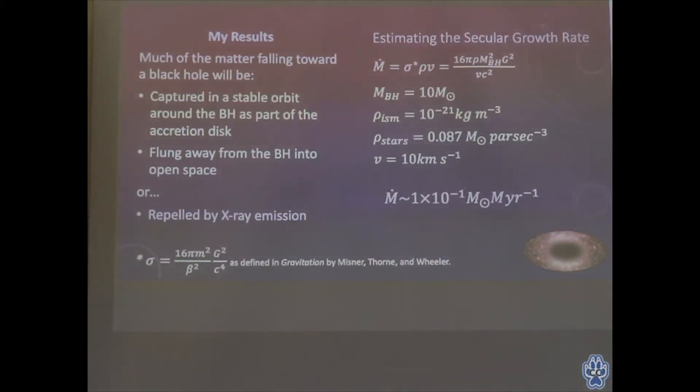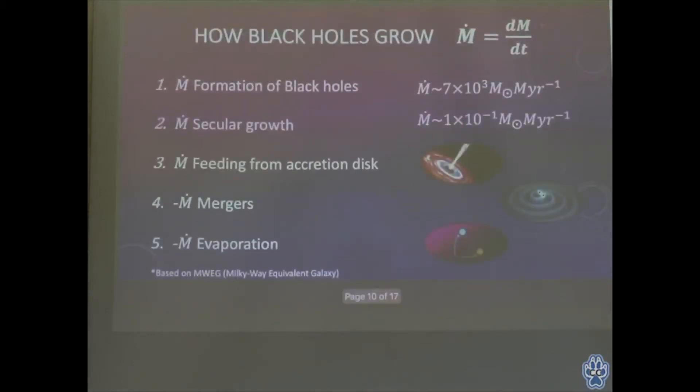The results of my simulation showed it's actually difficult for matter to be captured by a black hole. Often it's captured in a stable orbit as part of the accretion disk or just flung away into open space. There's also x-ray emission from black holes which pushes away masses before they can get close. To estimate the secular growth rate, we take a cross-sectional area multiplied by the density of matter and velocity, and we estimated about a tenth of a solar mass per million years for things that fall into a black hole.